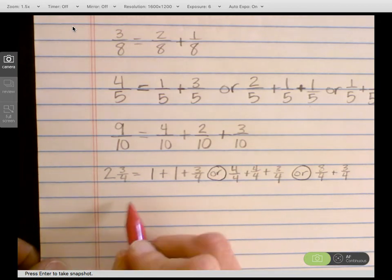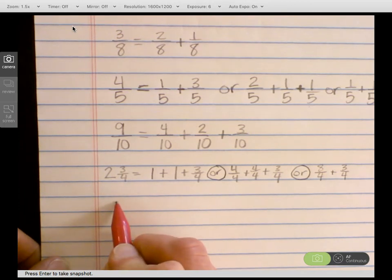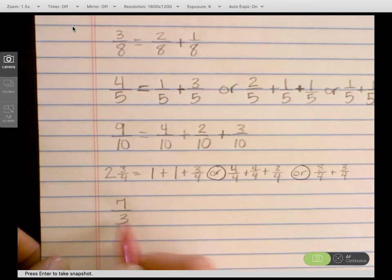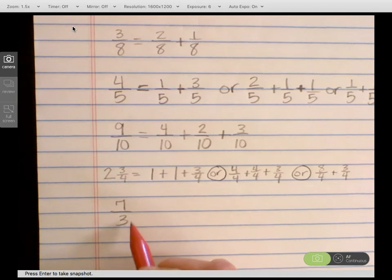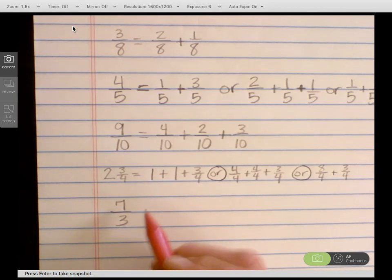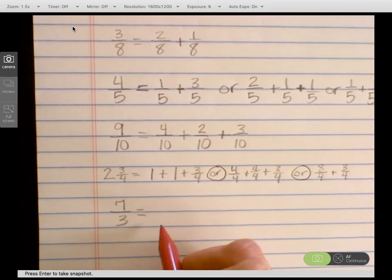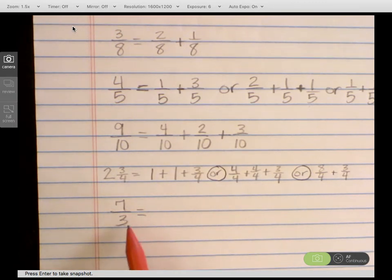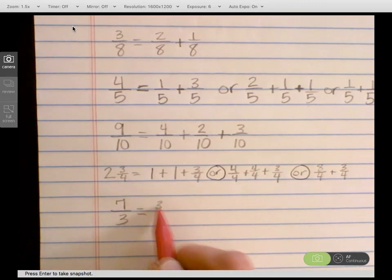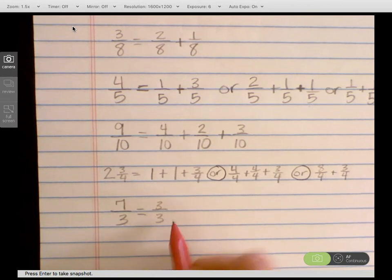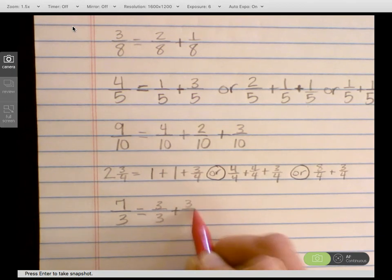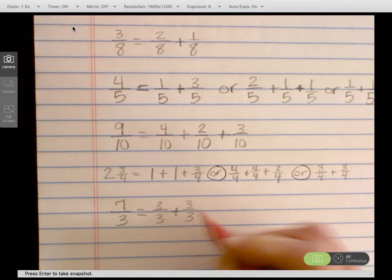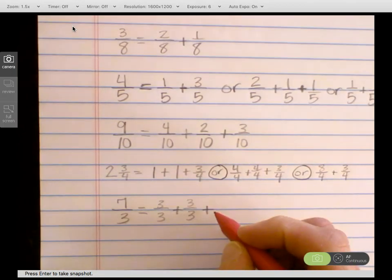Let's say we have the improper fraction 7 thirds. And remember, an improper fraction is a fraction that has a greater numerator than denominator. So it's more than 1 whole. So we could decompose 7 thirds by using 3 thirds. That's 1 whole. Plus another 3 thirds. That's 2 so far. Plus 1 third.